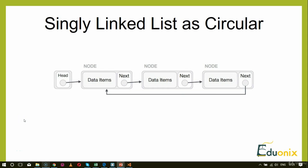Now comes the concept called the circular linked list. A circular linked list is a variation of a linked list in which the first element points to the last element and the last element points to the first element, so it moves in a circular pattern. Both singly linked list and doubly linked list can be made as a circular linked list.